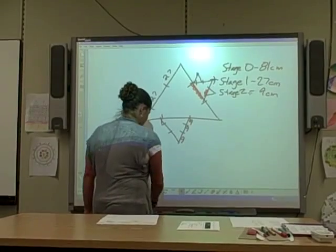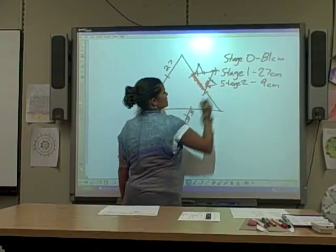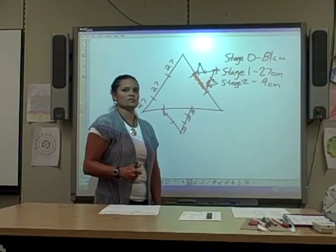Stage three would be three centimeters, and I would have my triangles coming out of here, and this is the beginning stages of the Koch snowflake.